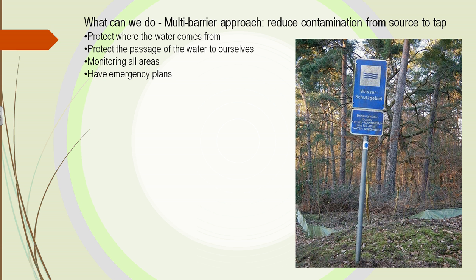What can we do? We have to have a multivariate approach. We have to reduce the contamination from the water source to when it comes out of our tap. We have to protect where the water comes from, how the water gets from that area to ourselves, and we have to have plans to monitor all of these areas.